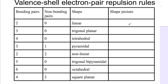If we look at the first one, we've got two bonding pairs and no non-bonding pairs, which leads to a linear shape. So if our central atom is M, we're going to have two bonding pairs getting as far away from each other as possible — a 180 degree bond angle.